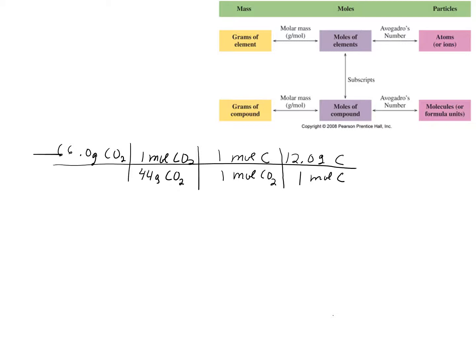We've used molar mass twice, which is fine — in one case grams of CO2 is on the bottom, and in the next grams of carbon is on top, because our units have to cancel. Checking units: grams of CO2 cancels with grams of CO2, moles of CO2 cancels with moles of CO2, and moles of carbon cancels with moles of carbon — leaving grams of carbon. The answer comes out to 18.0 grams of carbon.